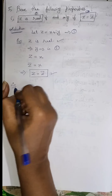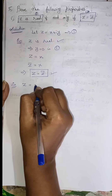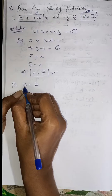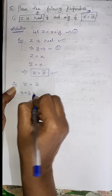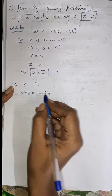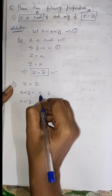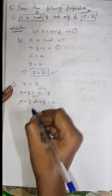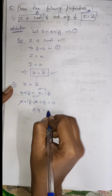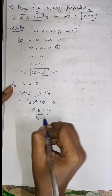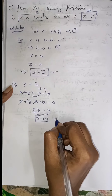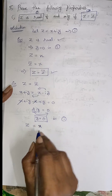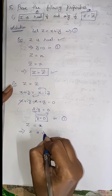For the second condition, given Z equals Z bar, we have to prove Z is real. Z value is X plus iY and Z bar is X minus iY. So X plus iY equals X minus iY. Moving terms: X plus iY minus X plus iY equals 0, so X minus X cancels and iY plus iY gives 2iY equals 0. Therefore Y equals 0 divided by 2i, so Y equals 0. Substituting in equation 1.